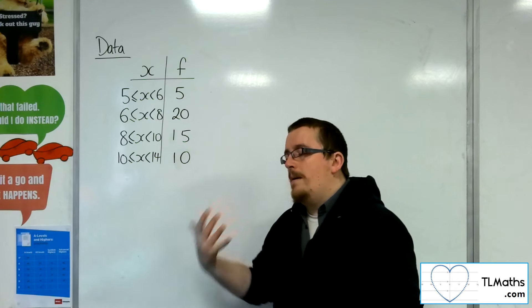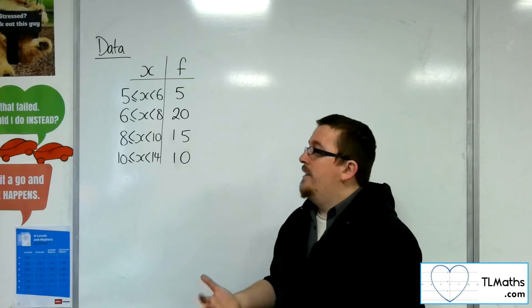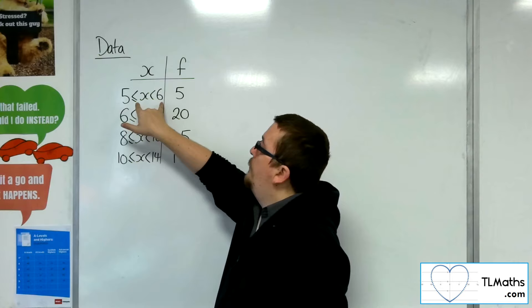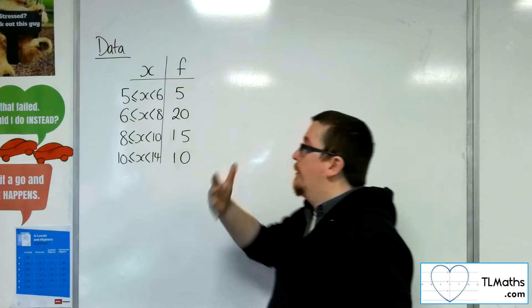And histogram bars don't have to have equal widths, and it's all down to the class interval. So the class interval for this grouping, for example, is 1, because it's going from 5 to 6, and there it's 2.